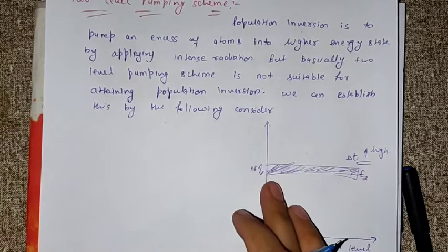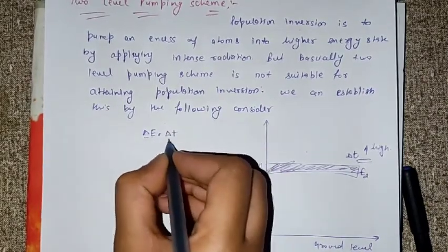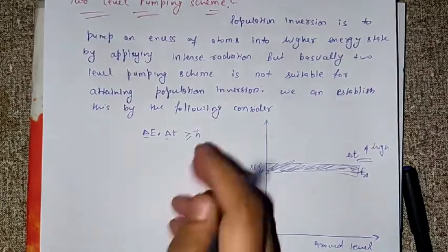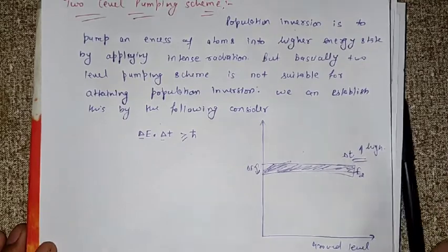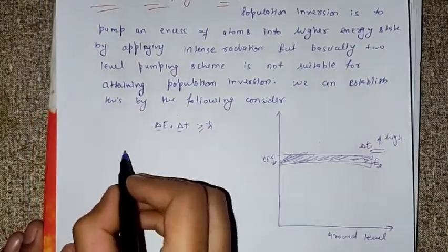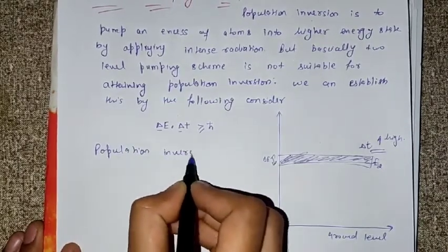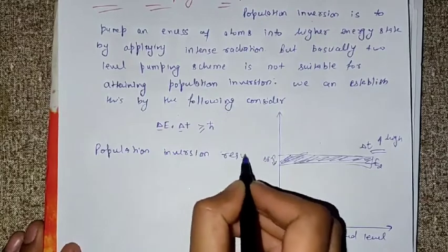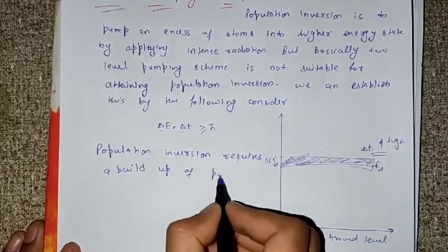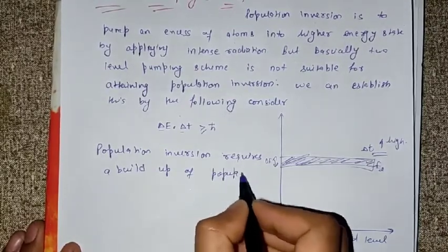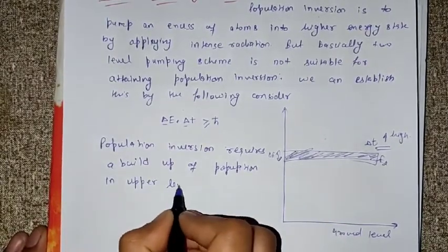You have studied the Heisenberg Uncertainty Principle: delta E times delta T must be greater than or equal to H-bar over 2. Population inversion requires a build-up of population in the upper level. This is only possible if the upper level is populated faster than it decays.